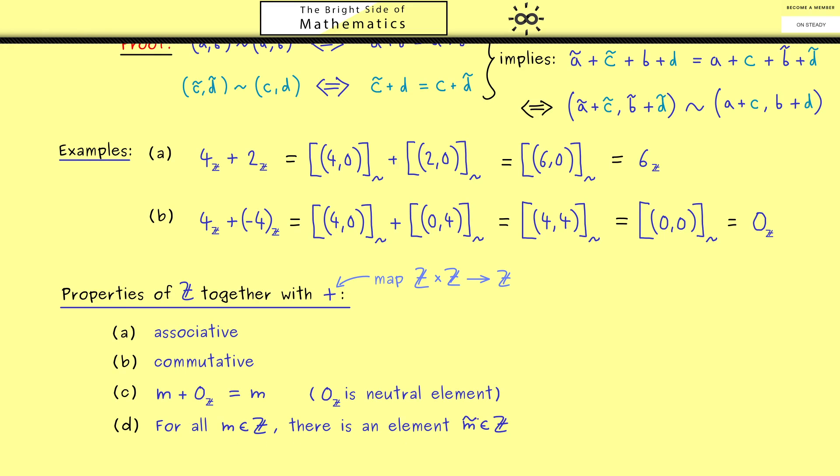However, now we also get a new one. So for each integer m we find another integer, let's call it m̃, with the property that m + m̃ is the neutral element. And this m̃ we call the inverse of m with respect to the addition.